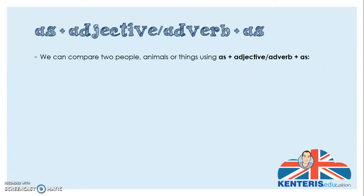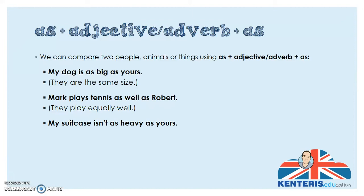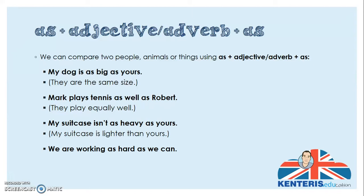Just one more type of comparison: using 'as adjective/adverb as.' We use this to compare two people, animals, or things as equal. For example: 'My dog is as big as yours' — they are the same size. 'Mark plays tennis as well as Robert' — they play equally well. 'My suitcase isn't as heavy as yours' — the negative form means my suitcase is lighter than yours. 'We are working as hard as we can' — so we can't work any harder.